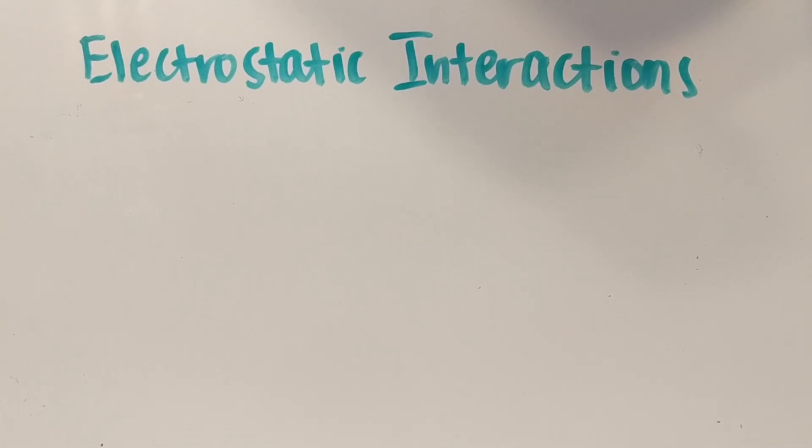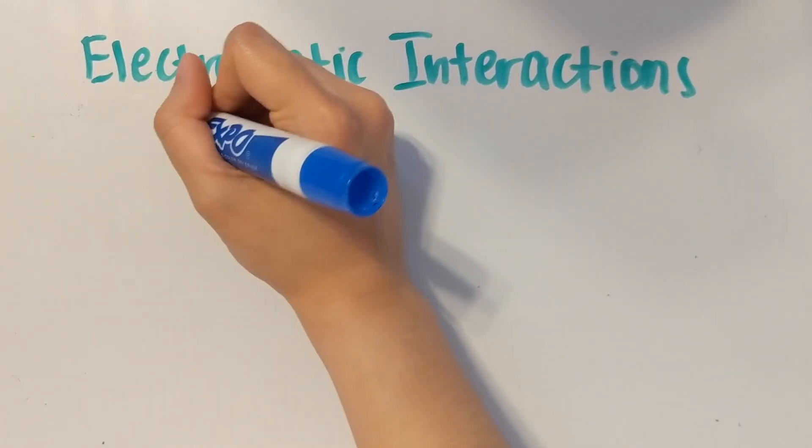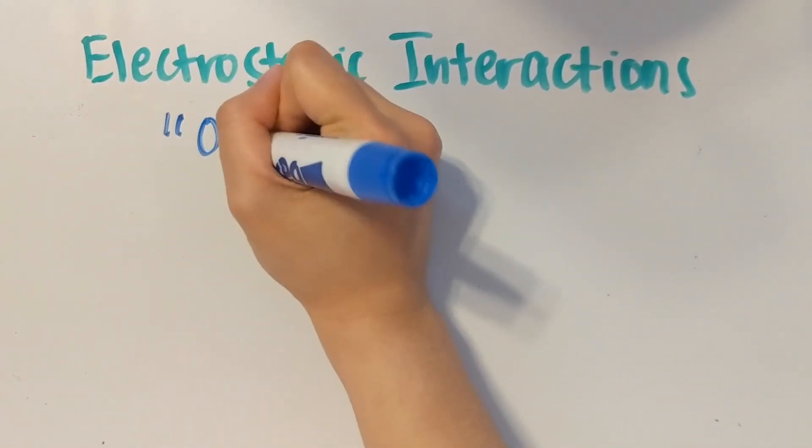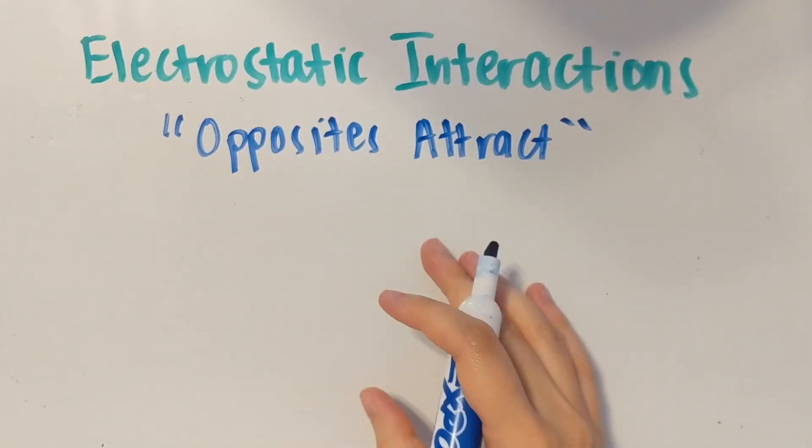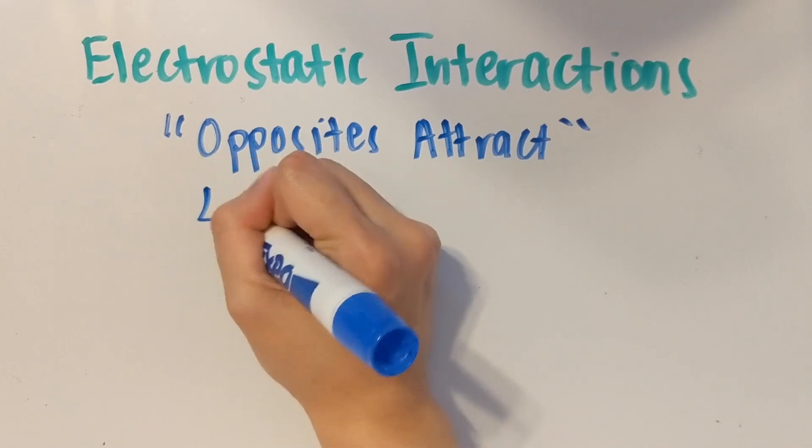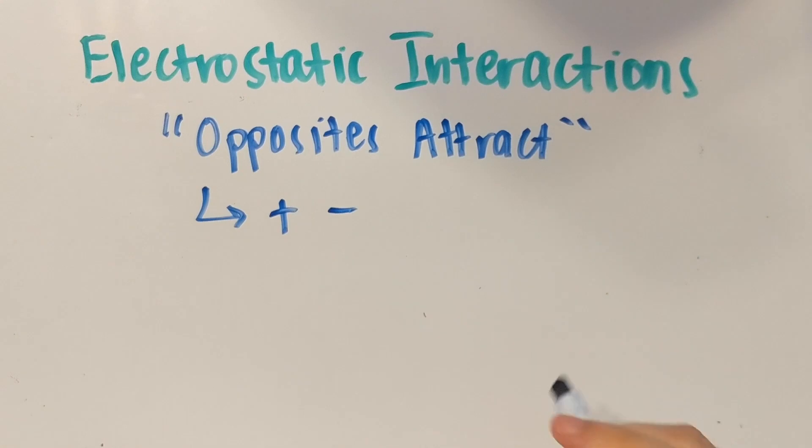Today we're going to go over electrostatic interactions, and the main concept that I want to emphasize is the fact that opposites attract. This is the big idea of all electrostatic interactions, and this is particularly evident within the interaction between protons and electrons.